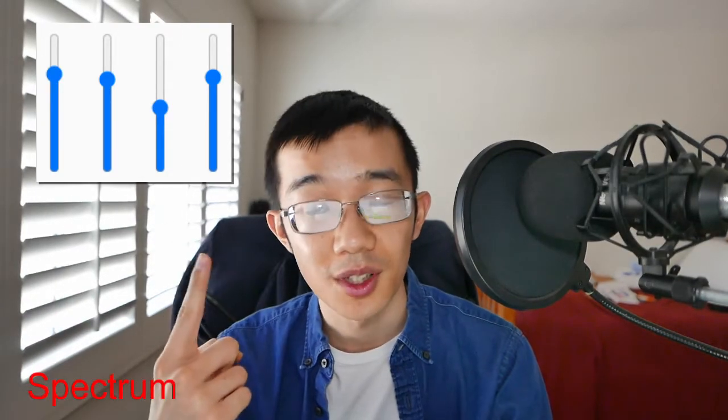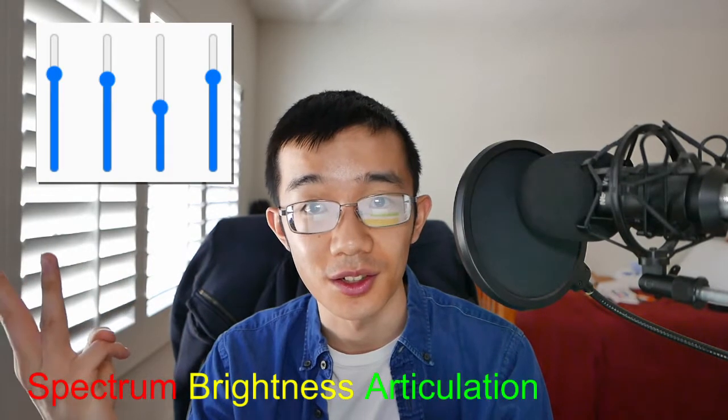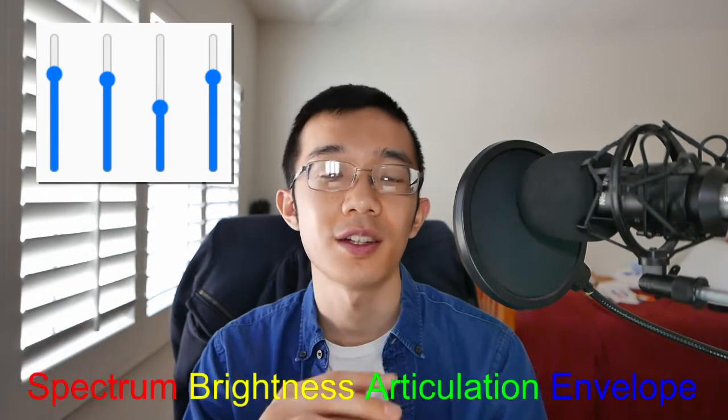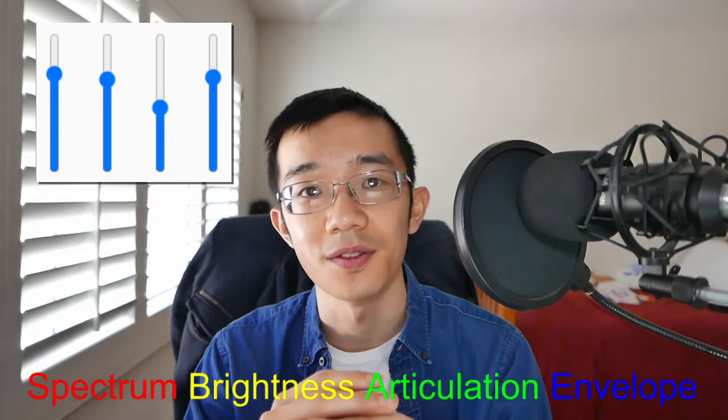Now based off the past 43 years of timbre studies, I decided to use a four-dimensional timbre space, meaning I actually have four parameters to control my synthesized sound: spectrum, brightness, articulation, and envelope. Now let's take a look at how these parameters control the sound of the Timbre Explorer.